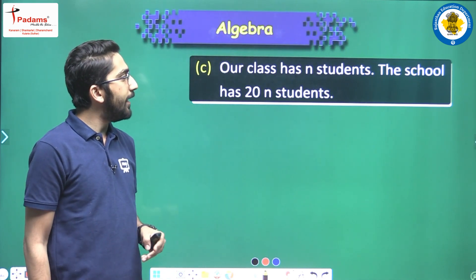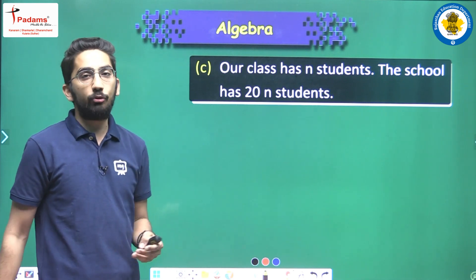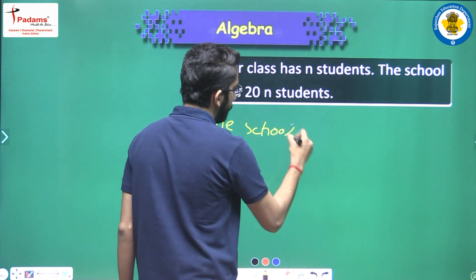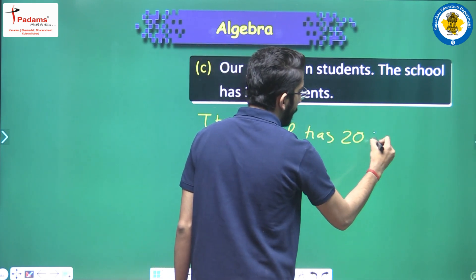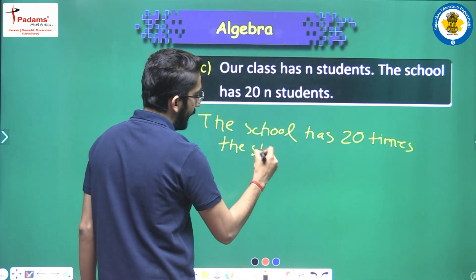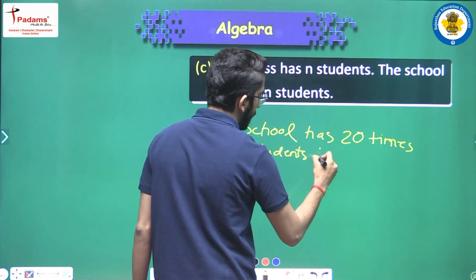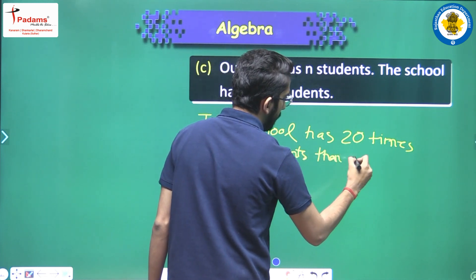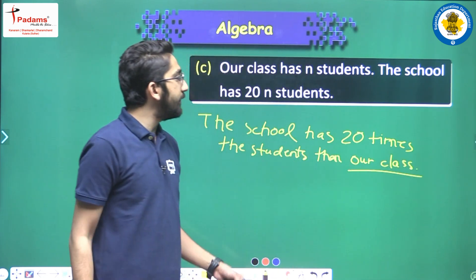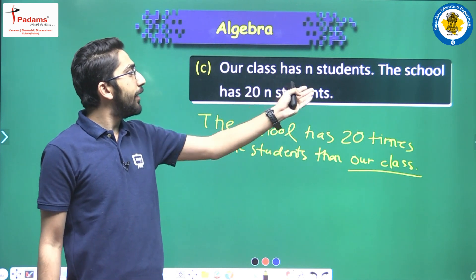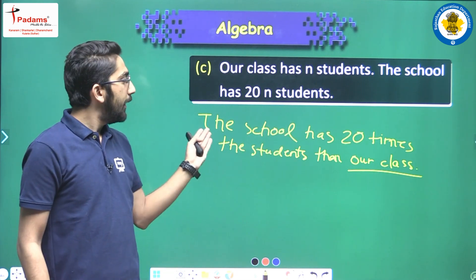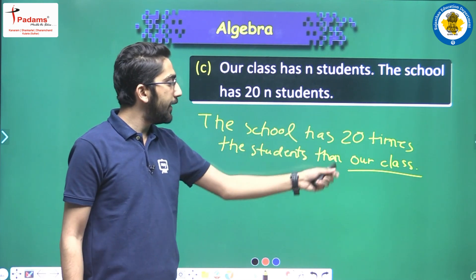Our class has n students and the school has 20n students. In ordinary language: the school has 20 times the number of students in our class.